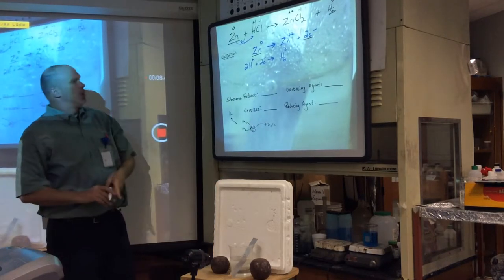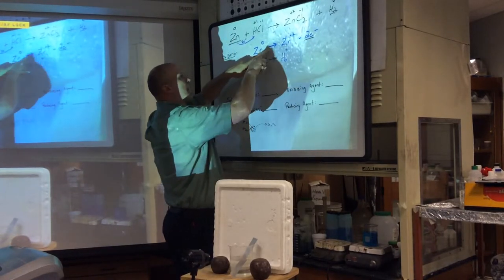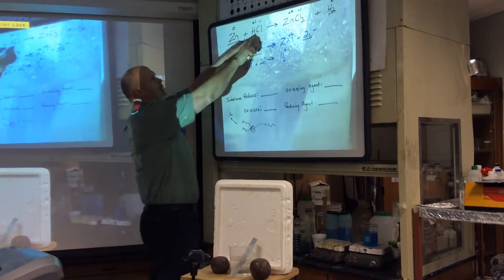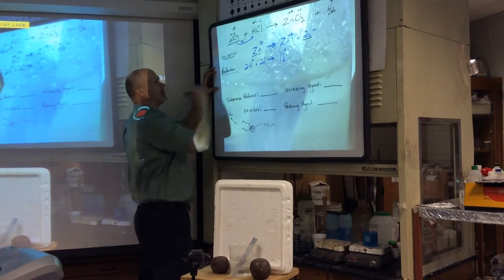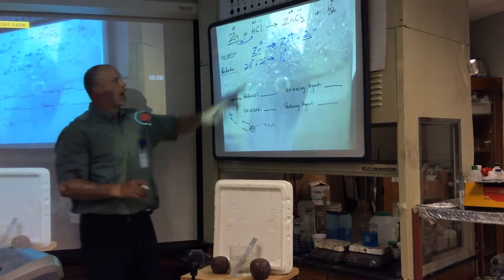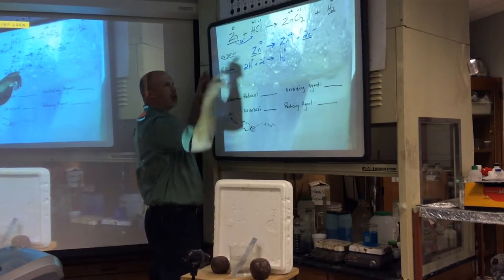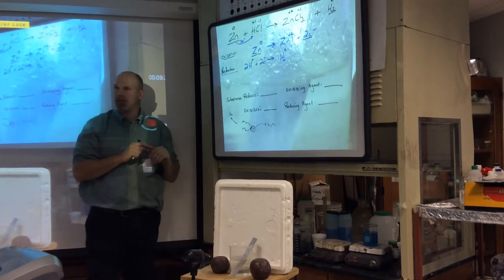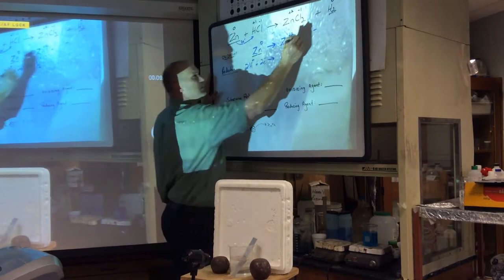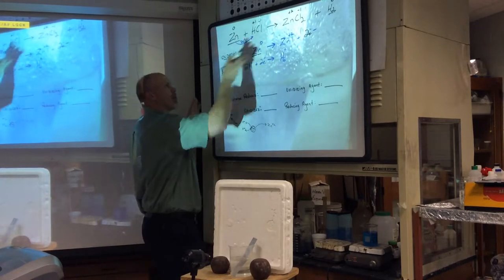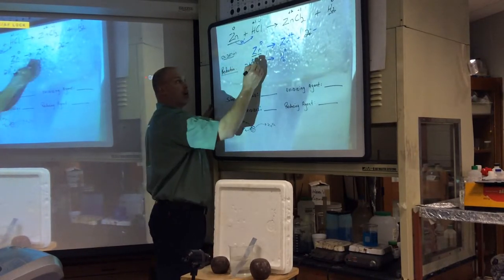Back to what we did: zinc goes up in charge, so I put the electron on the product side so both sides of the half reaction are the same. H⁺ becomes H zero — its charge went down. That's what reduction means: your charge is going down. H⁺ goes to zero. I have two electrons on the reactant side because for H⁺ to go to H zero, I need electrons to balance the side.